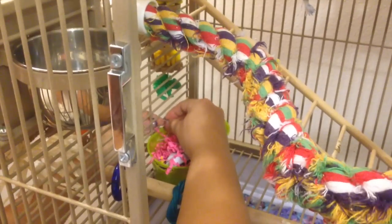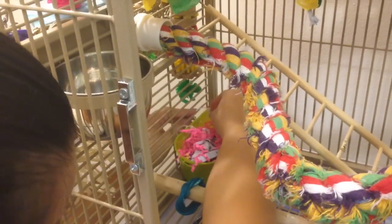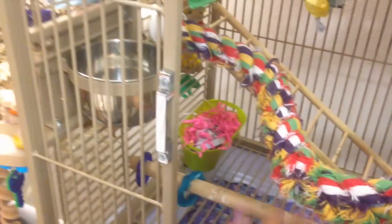And then once you've done that, just go ahead and loop it through and tie it down with your zip ties. And once you've done that, your foraging basket is complete.